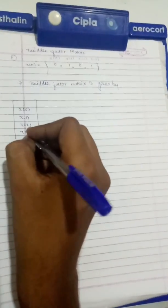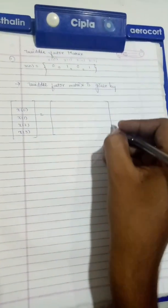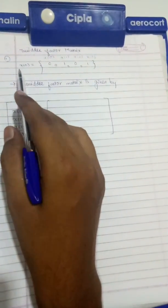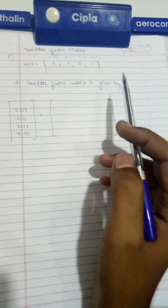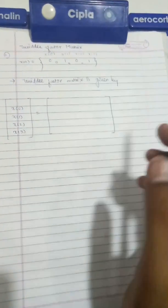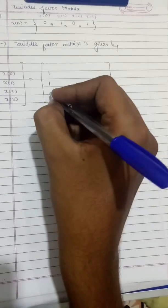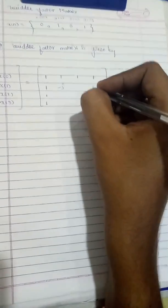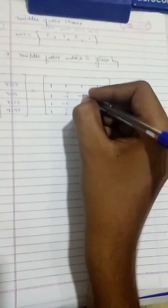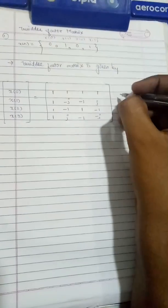We write X(0), X(1), X(2), and X(3). In an exam, the question will give X of n and ask you to find X of K using butterfly structure or twiddle factor matrix. The twiddle factor matrix is formed as: row 1: [1, 1, 1, 1]; row 2: [1, -j, -1, j]; row 3: [1, -1, 1, -1]; row 4: [1, j, -1, -j].